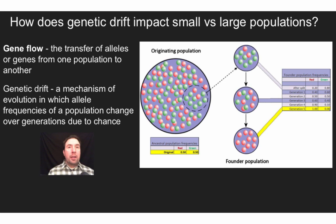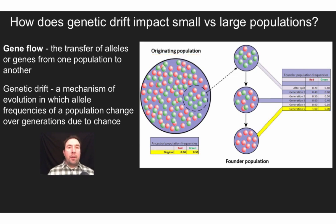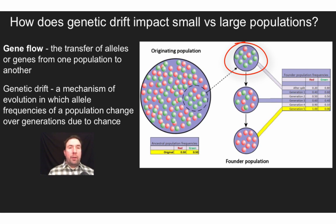Another term that goes hand in hand with gene flow is genetic drift — a mechanism of evolution in which allele frequencies of a population change due to chance. When you see the word 'drift,' think 'just by chance.' Here we have a model using red and green spheres to represent our original population, which has roughly 50% red and 50% green. By chance, in the first random selection we only get two out of ten spheres being red, giving us an 80%/20% population shift.